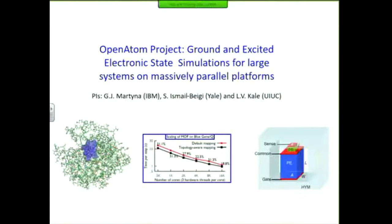This collaboration, for this particular grant, is between Glenn Martina and Saurabh Ismail Beji from Yale, and Glenn Martina from IBM Research. But the original collaboration on OpenATOM goes back many, many years — 2002, maybe, or a little bit after that — with Glenn, when we started developing the OpenATOM project.